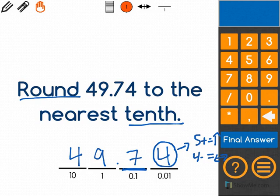As you can see here, we have the number four, which means that we will keep the number what it was as a seven. We do not change the numbers before that seven, and our number is 49.7.